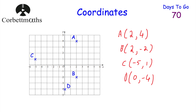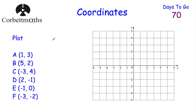Now let's have a look at plotting some. We've got points A, B, C, D, E, and F — pause the video now and plot these points. Point A is one, three, so that means one along the corridor, three up — so it would be there. Point B is five, two, so that's five along the corridor and then two up — that's point B there.